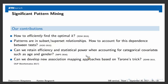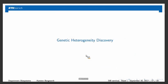Additional contributions from our group include: how to account for subset-superset relationships between the patterns we test; how to correct for covariates such as age and gender of the patient while retaining computational efficiency and statistical power, which we solved in 2016; and whether we can develop new association mapping approaches based on Tarone's trick — the answer is yes. I will quickly describe one new association mapping approach we developed: genetic heterogeneity discovery.